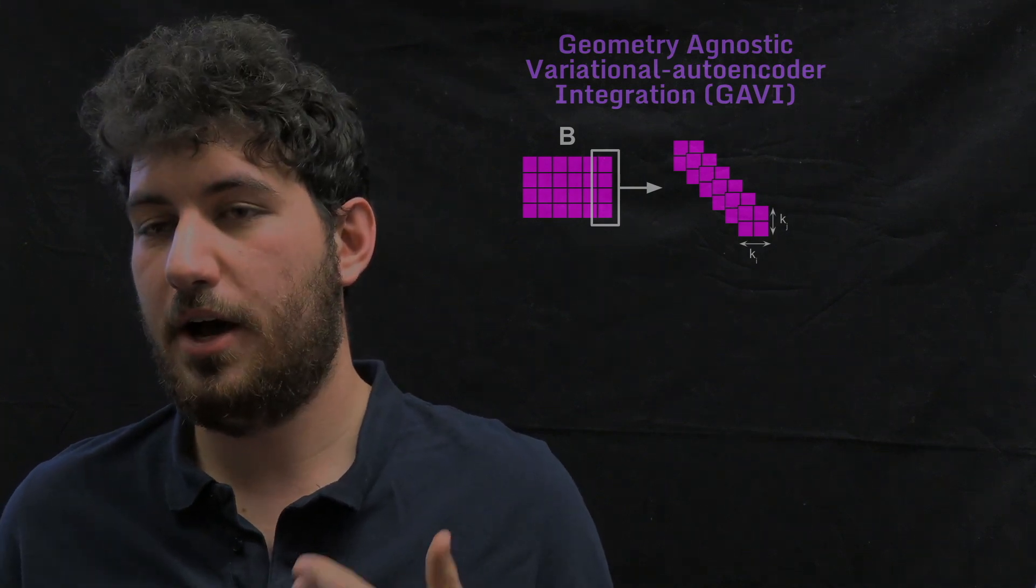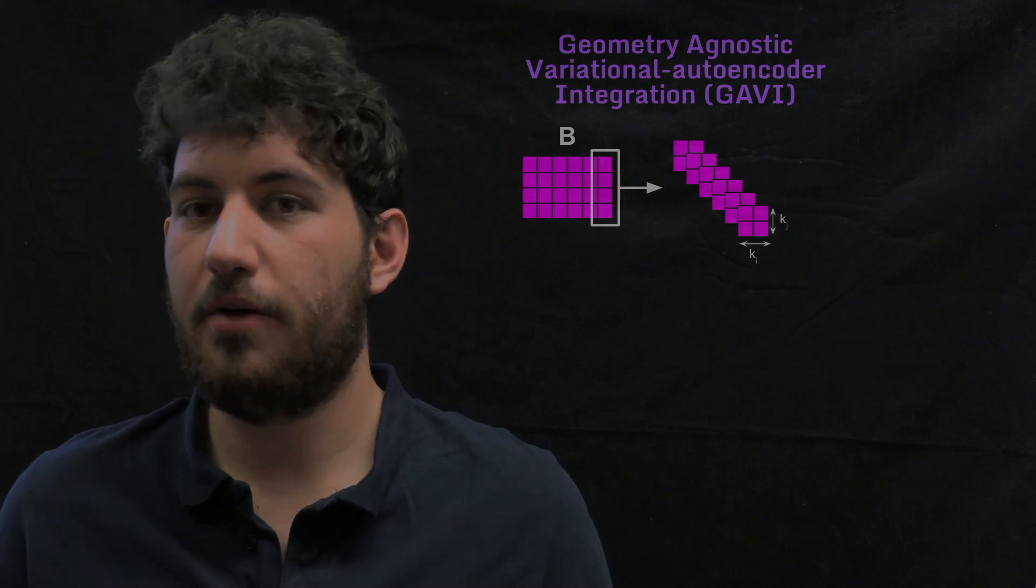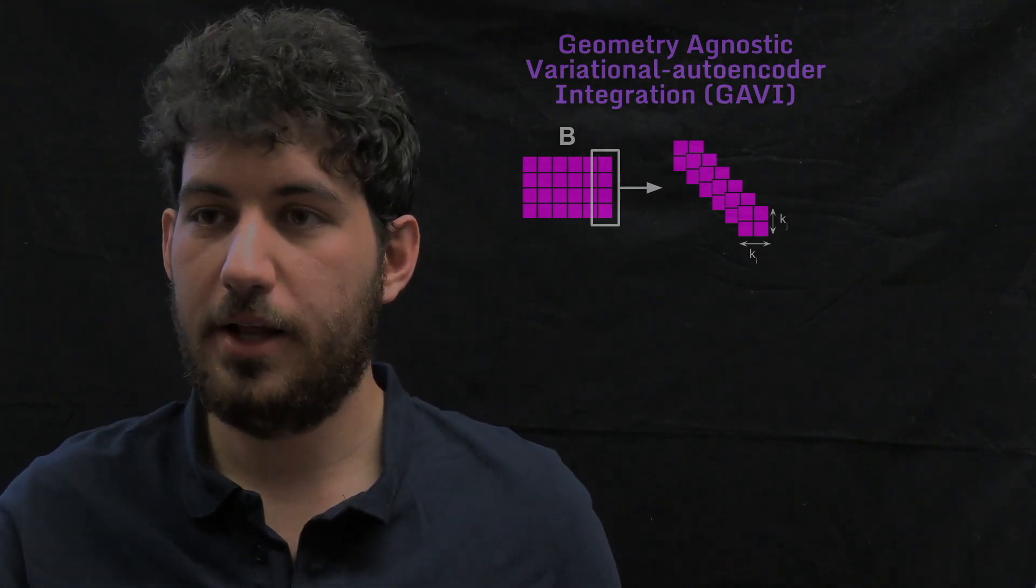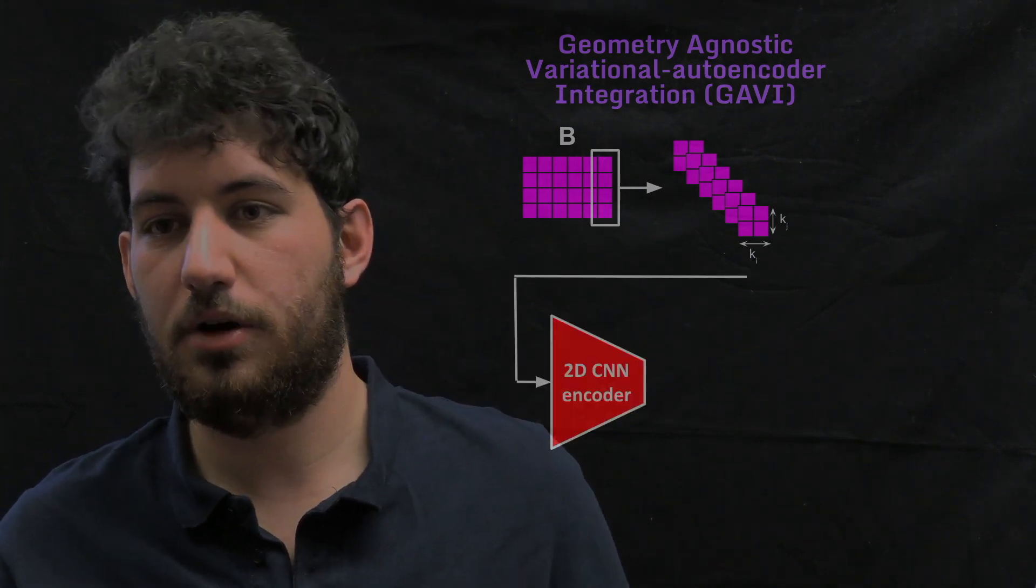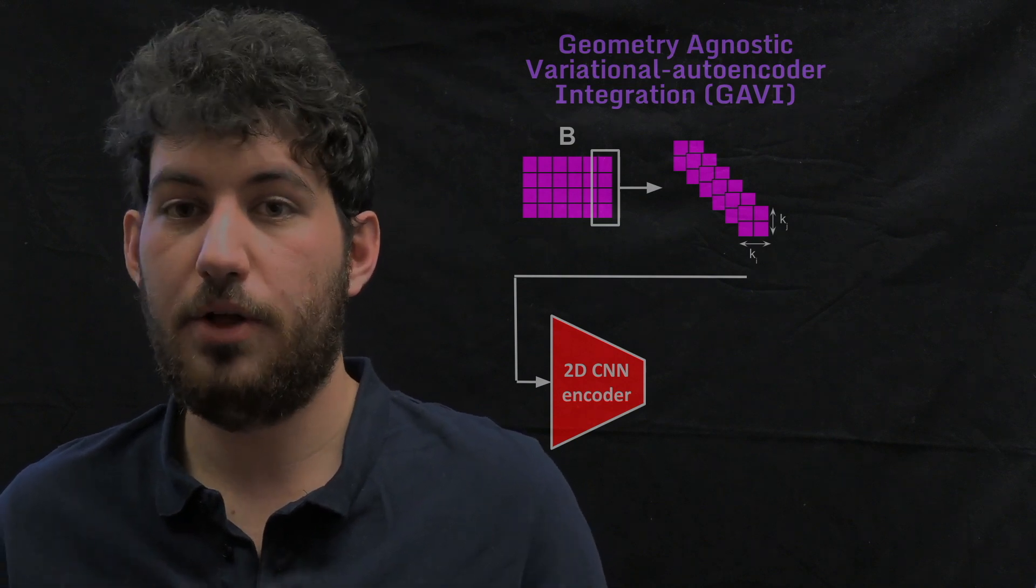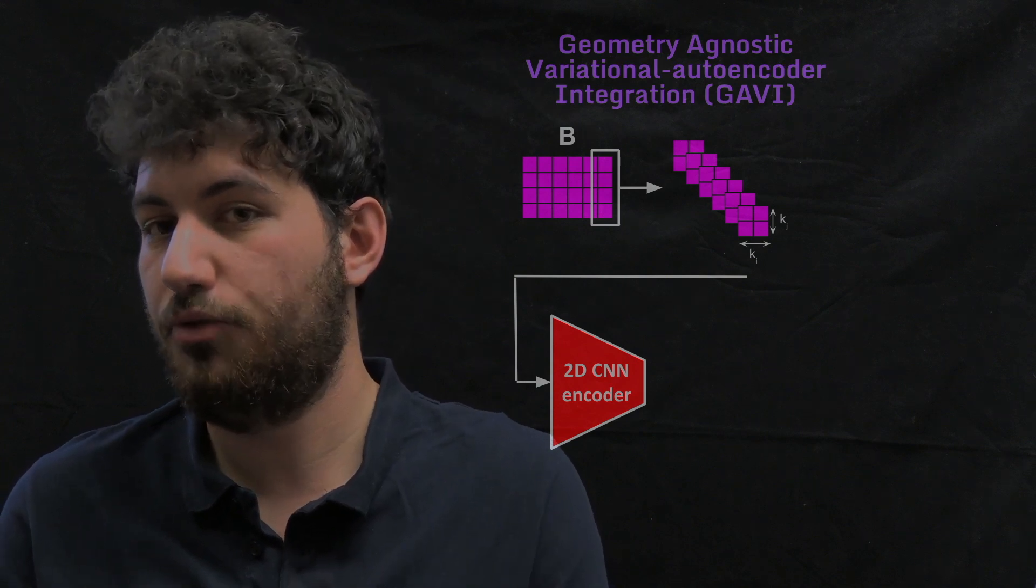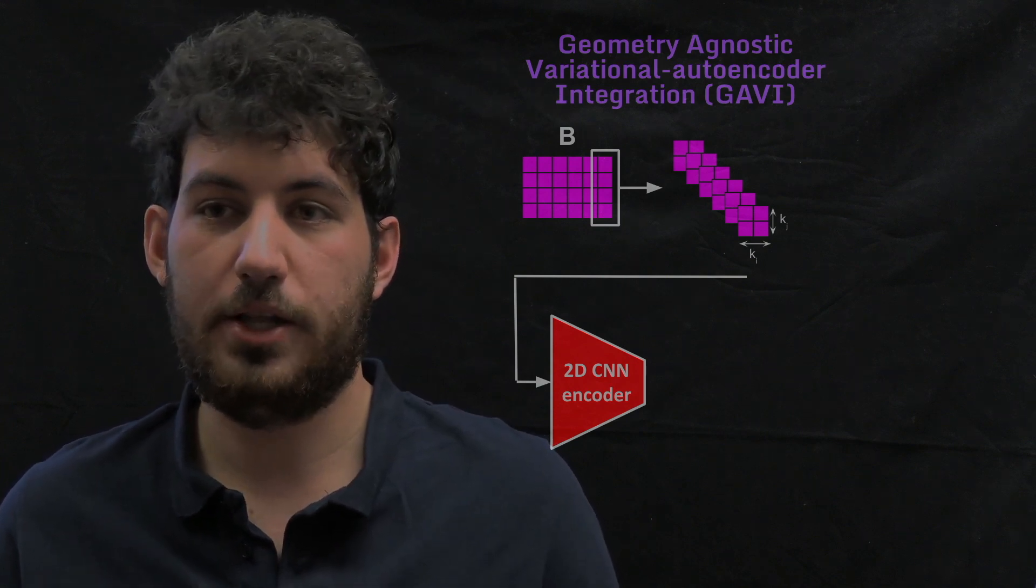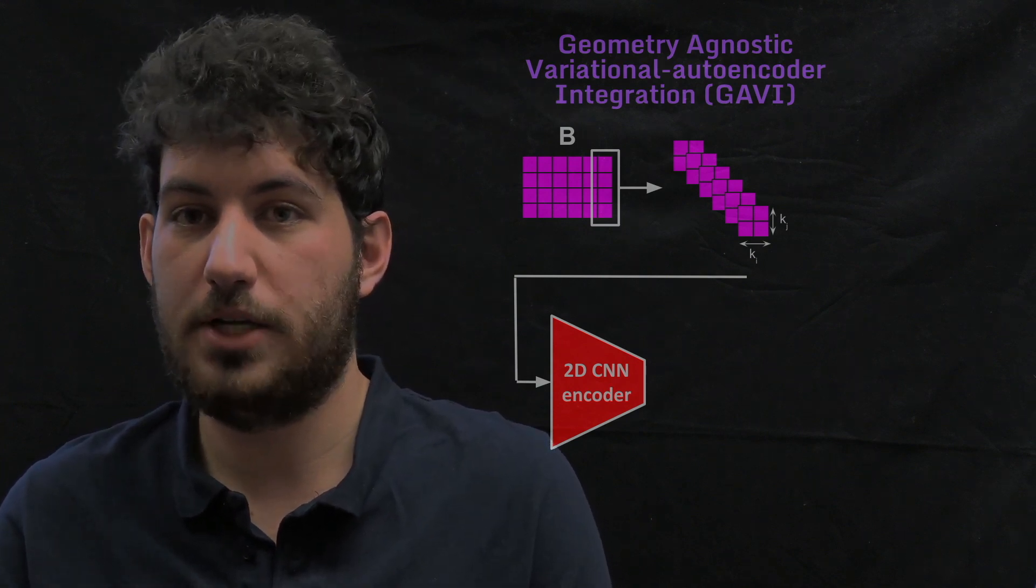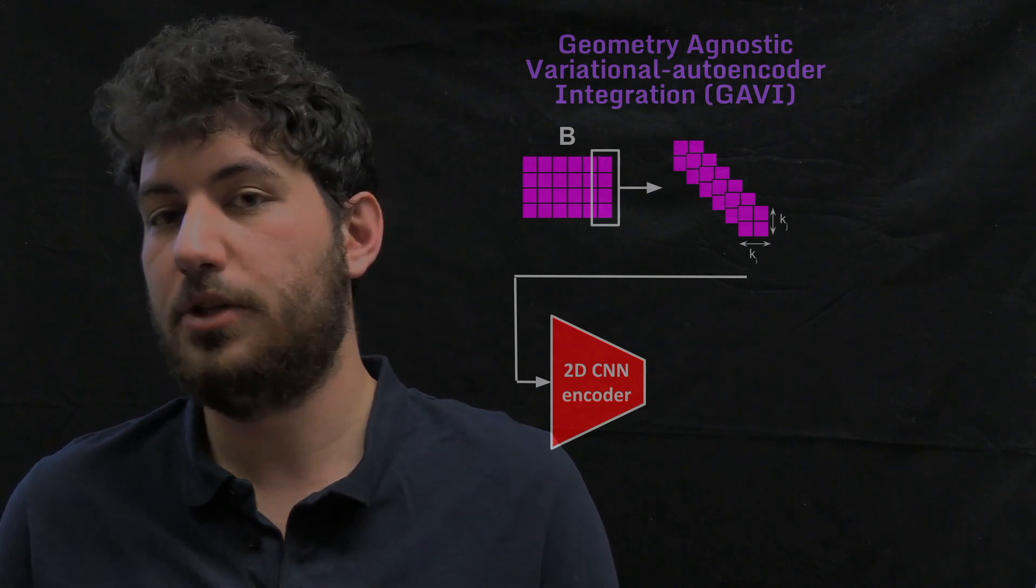And then those images are the input of a CNN encoder. This CNN encoder is quite shallow because, for instance, in the case of the cylinder, it just has three layers. Because the input size is pretty small, it's just 40 by 40 when our original data was 72 million grid points.